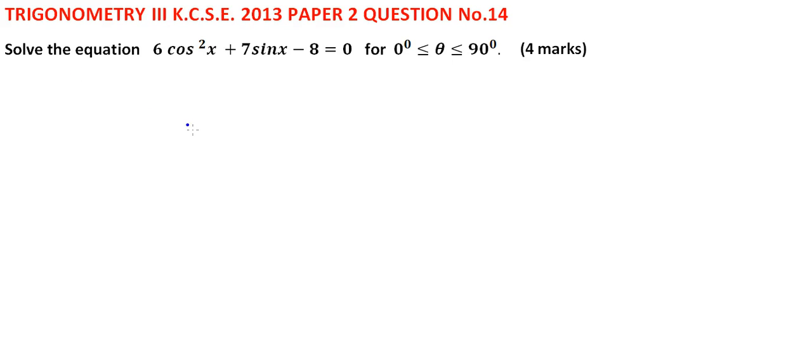Solve the equation 6 cos squared x plus 7 sin x minus 8 equals 0 within the range of 0 to 90 degrees. This is a quadratic equation.